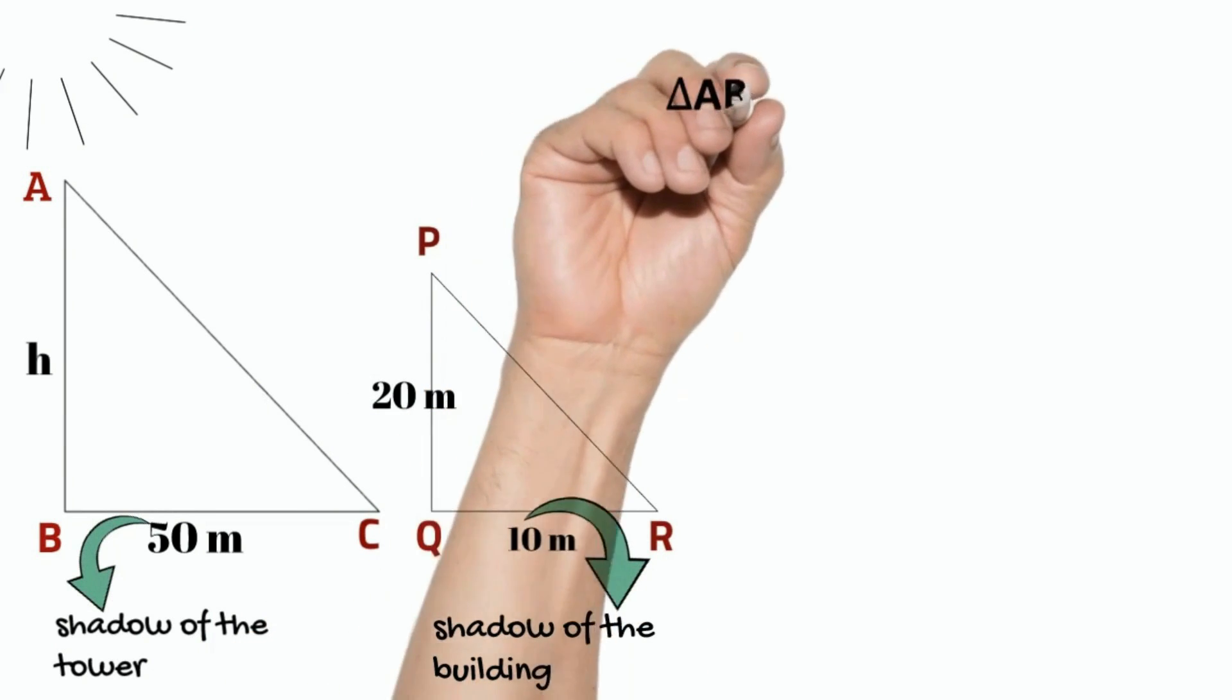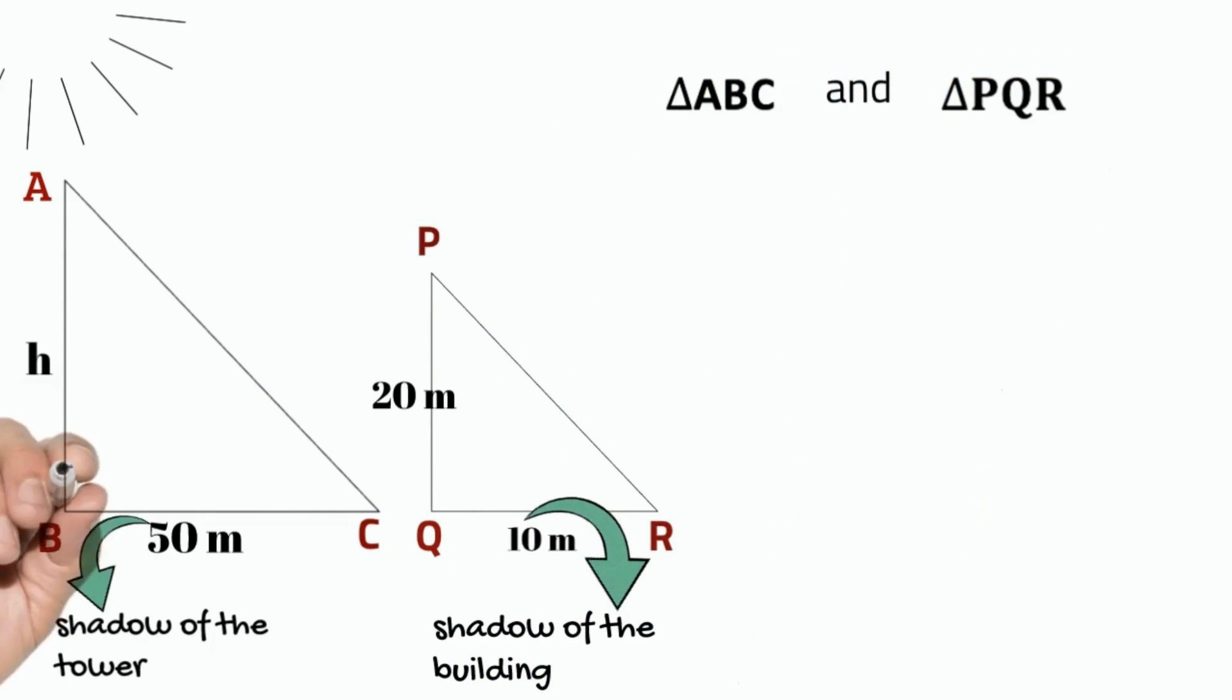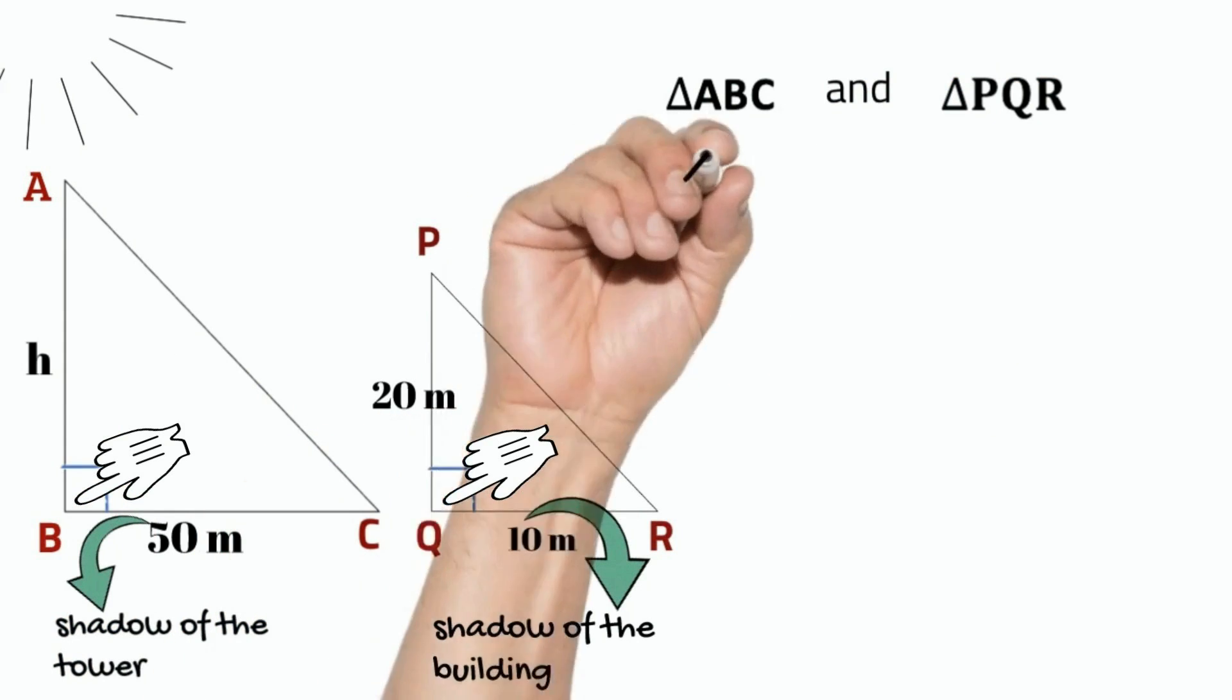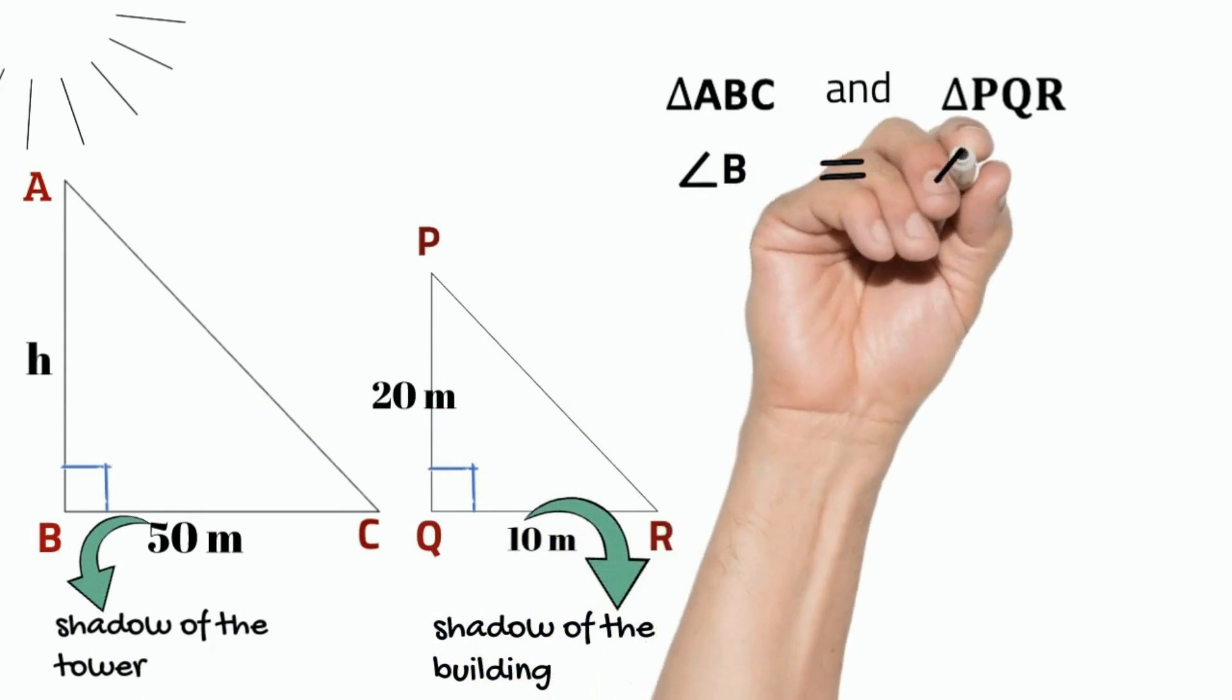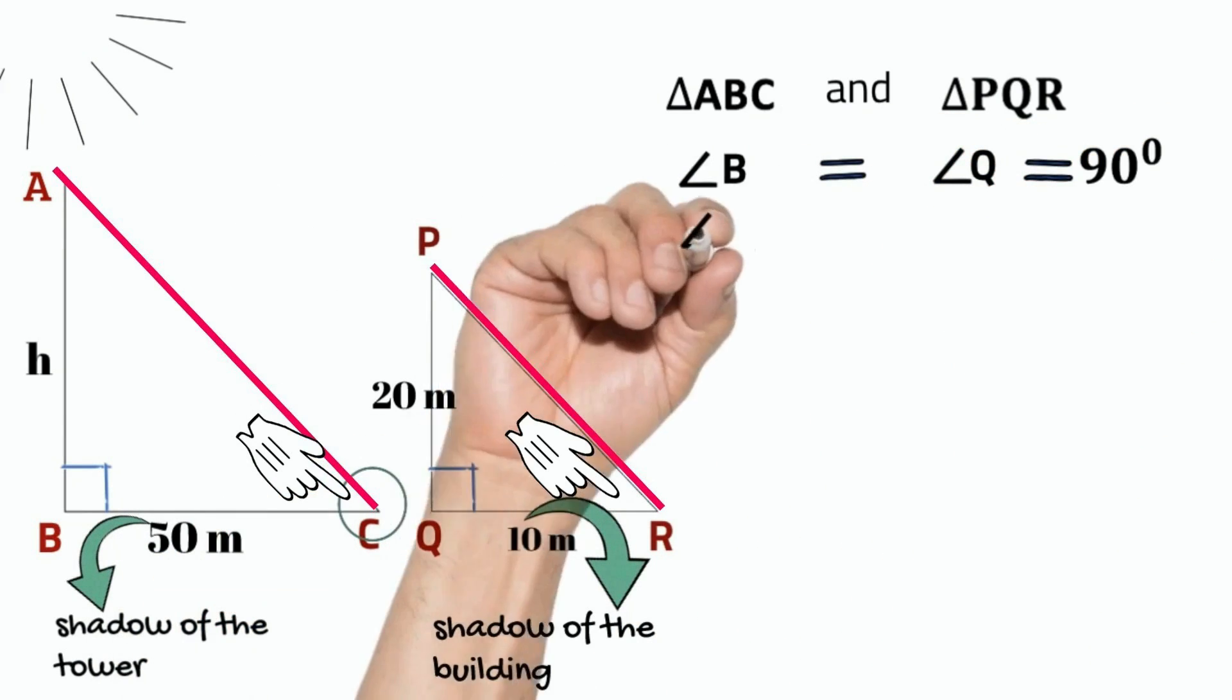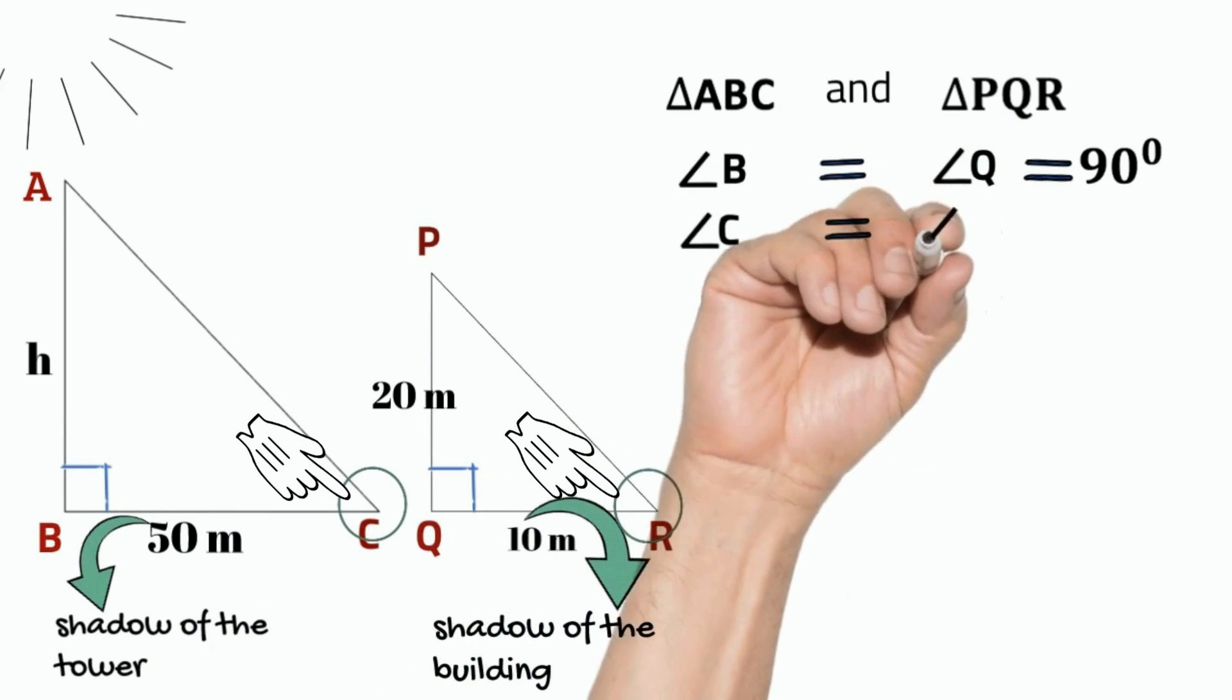Consider the triangle ABC and PQR. Tower and house are perpendicular in height. Angle B equals angle Q equals 90 degrees. Angle C equals angle R. Same elevation in both cases, as both shadows are cast at the same time.